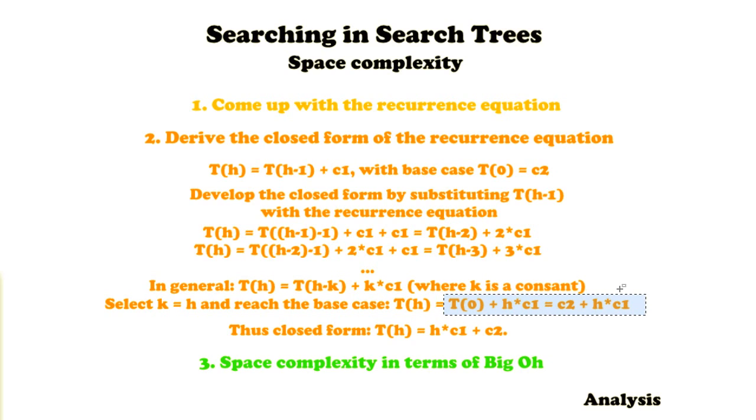Then in this case T(h) is T(0) + h × c1, which is actually c2 because we said that the base case is c2. And this is c2 + h × c1. Thus the closed form is T(h) = h × c1 + c2.